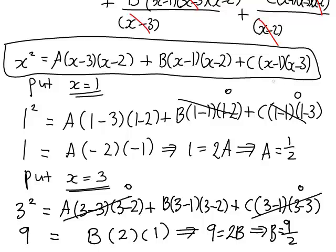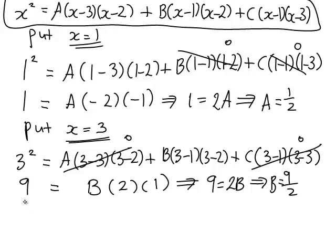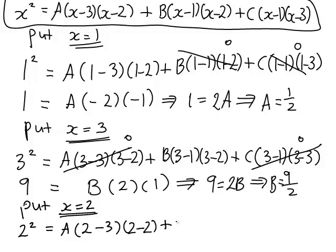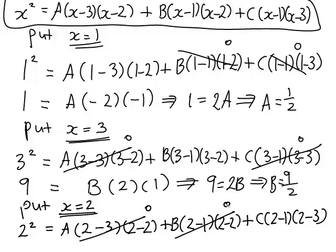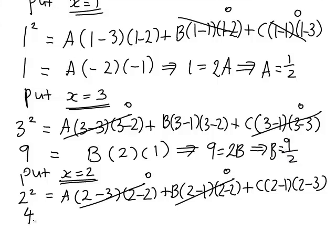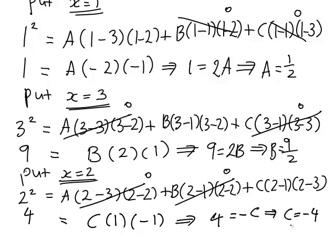To find the last unknown c, we put in x equals 2 to eliminate the (x minus 2) factors. Substituting x equals 2: 2 squared equals a times (2 minus 3)(2 minus 2) plus b times (2 minus 1)(2 minus 2) plus c times (2 minus 1)(2 minus 3). The first two terms go to zero, leaving 4 equals c times 1 times (negative 1), so 4 equals negative c, which implies c equals negative 4.